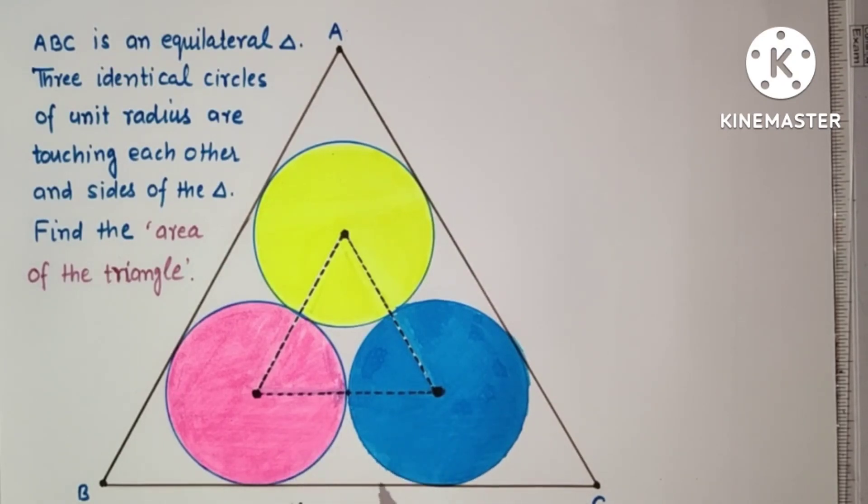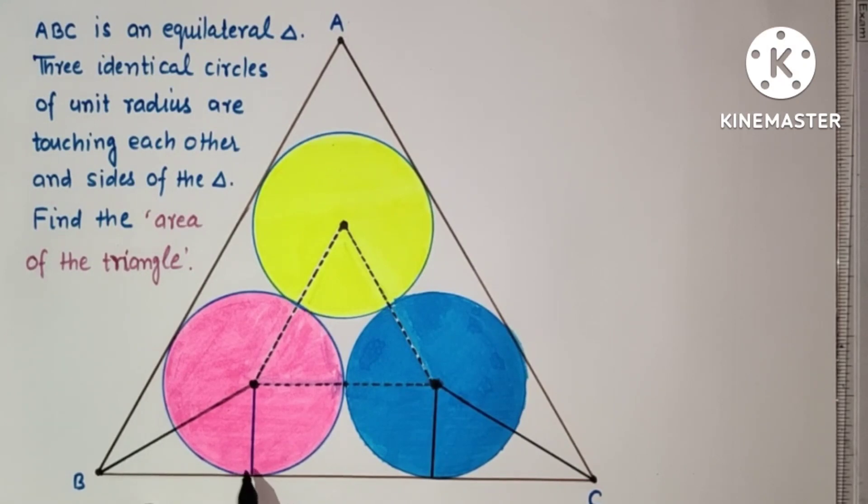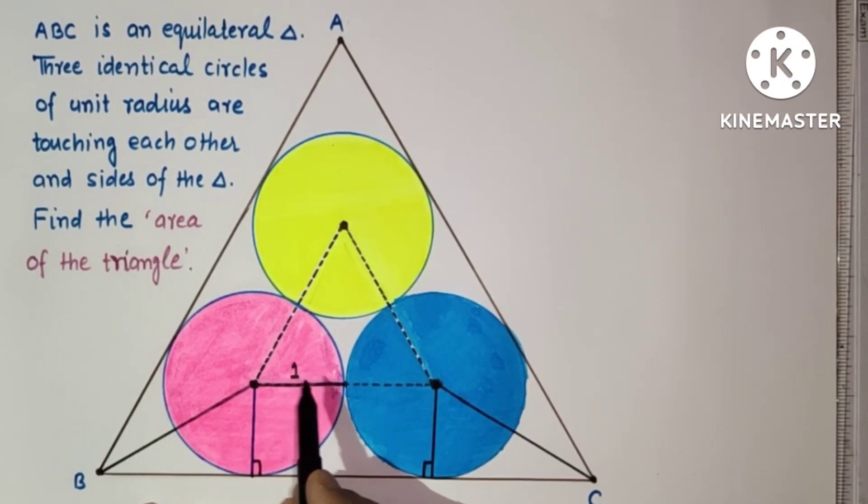We have to find the area of the equilateral triangle ABC. Draw perpendicular from the center to the side BC. So we have drawn perpendicular. This radius is one unit and this is also one unit, so here to here it is two units. This is one unit, this is also one unit.